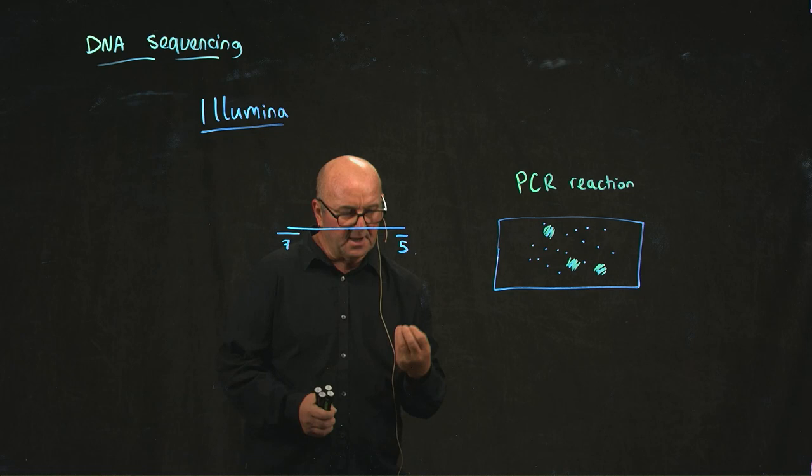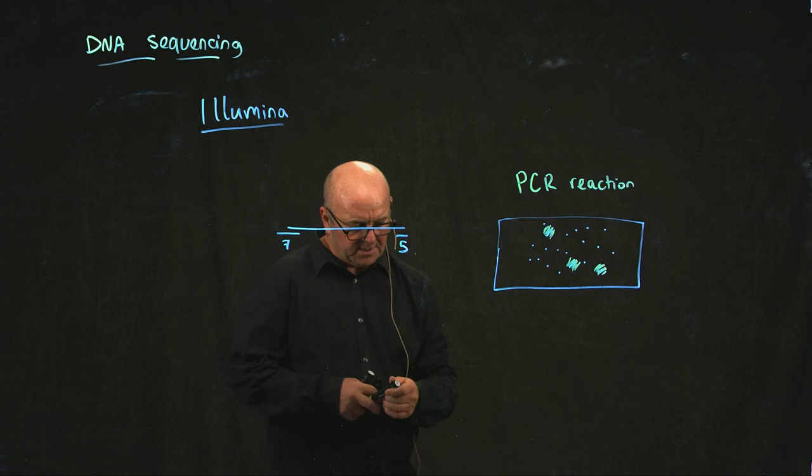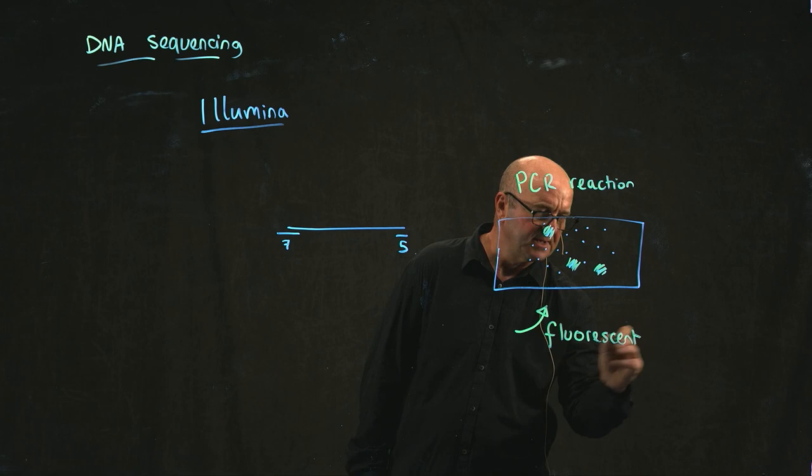Once you've got a large amount of DNA just in those little local regions, you then do the sequencing where you add fluorescent DNTPs.